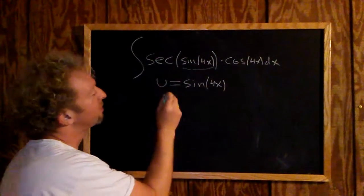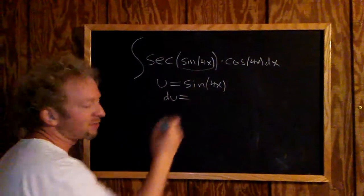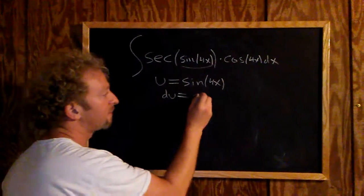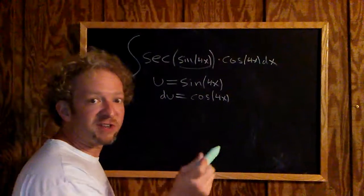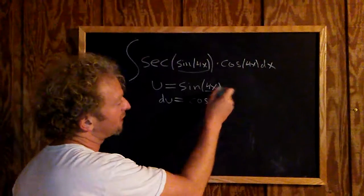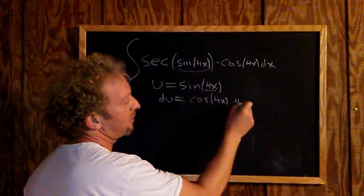Now we'll compute du. The derivative of sine is cosine, so this is cosine of 4x. You have to multiply by the derivative of the inside—that's the chain rule. The derivative of 4x is 4, so du equals cosine of 4x times 4 dx.